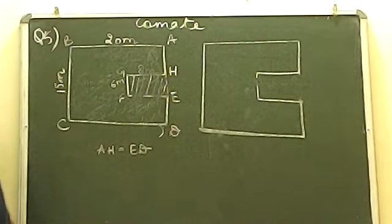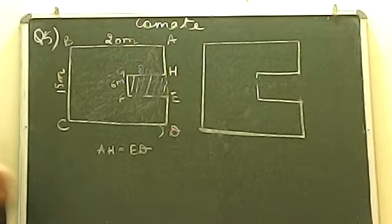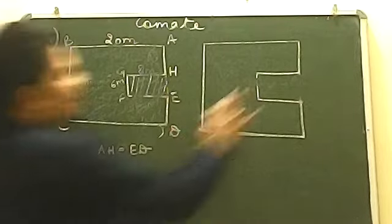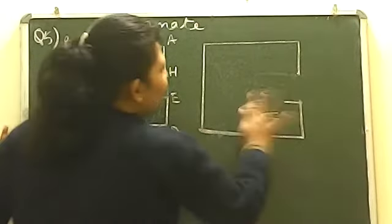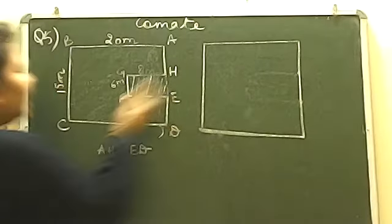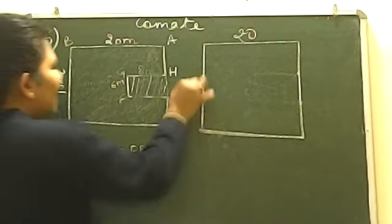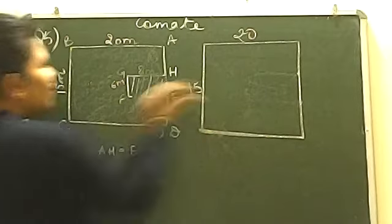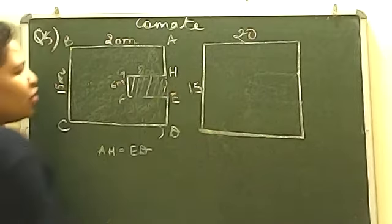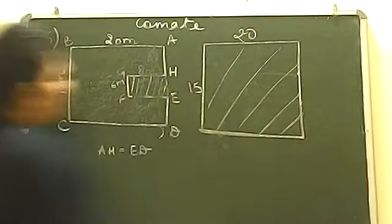If you prefer this method it is the simpler one, but you can also use your own method. So first, I am taking out the area of the larger portion. The dimensions are given as 20 meters and 15 meters.